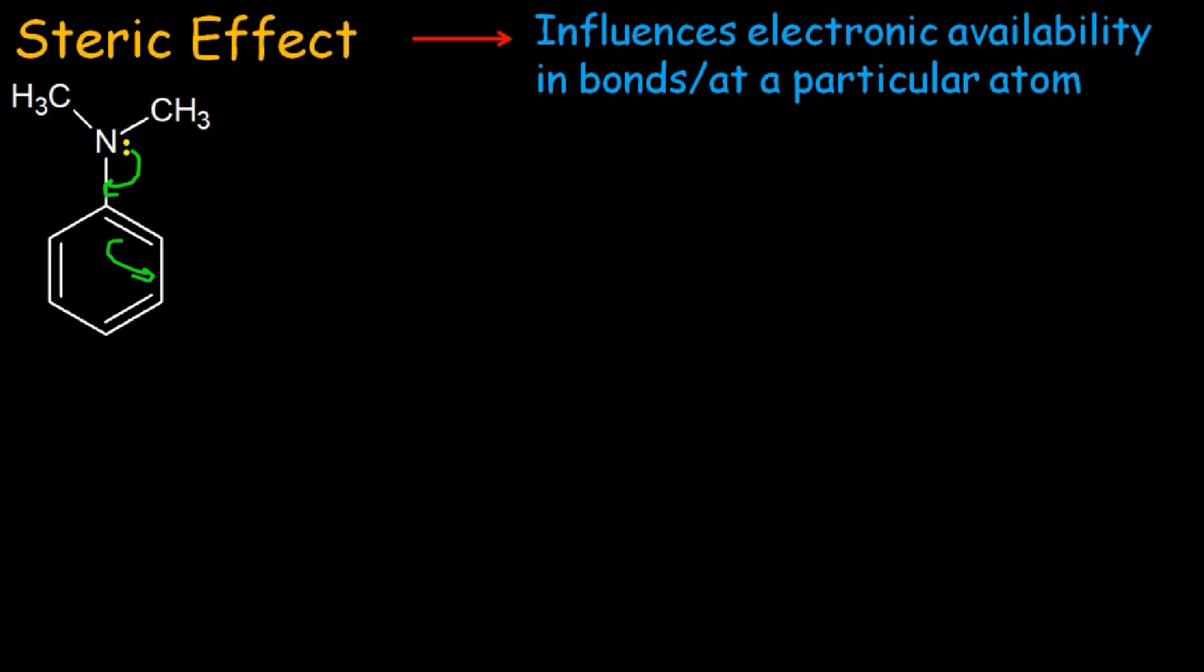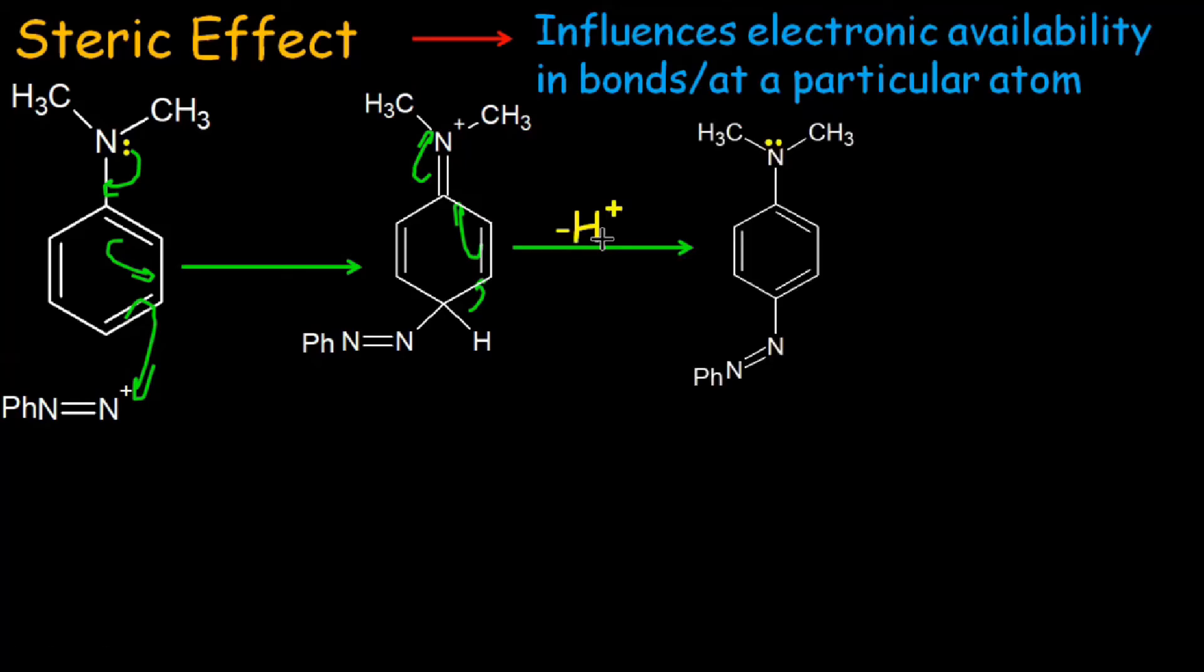When the negative charge on the para-position attacks the diazonium cation, the aromaticity of benzene ring is disturbed. This is regained when the bond is shifted between meta and para-carbon and hydrogen is removed, and at the end, the nitrogen gets its lone pair back, generating this product.